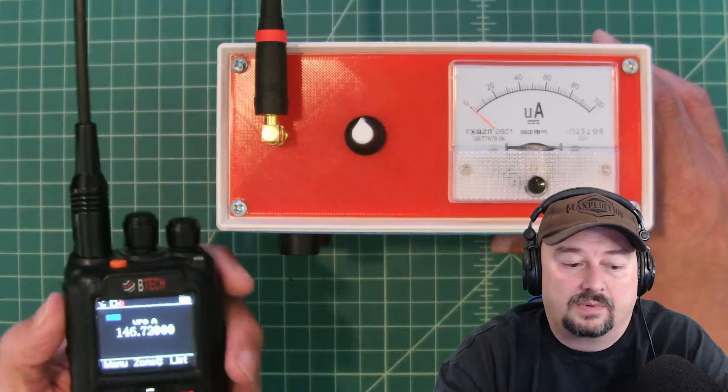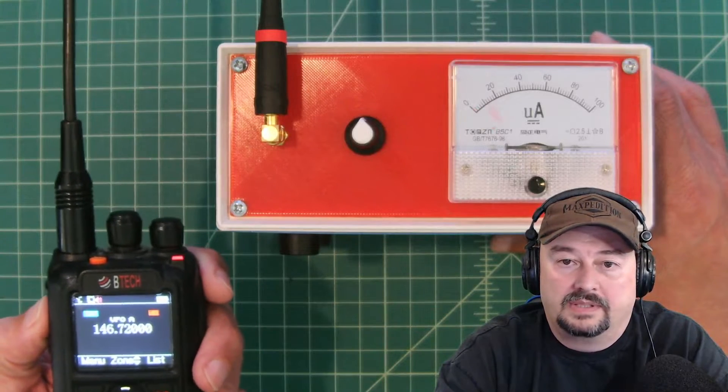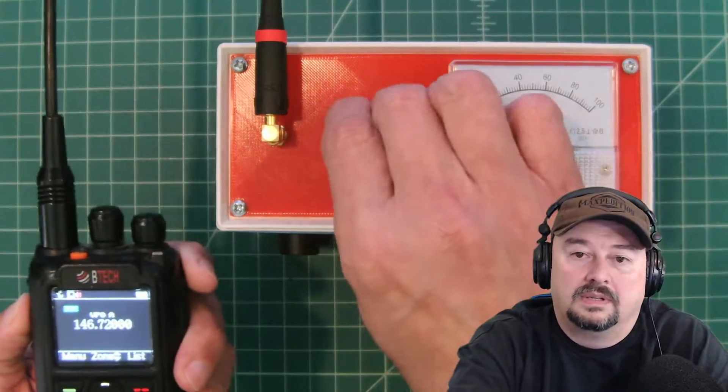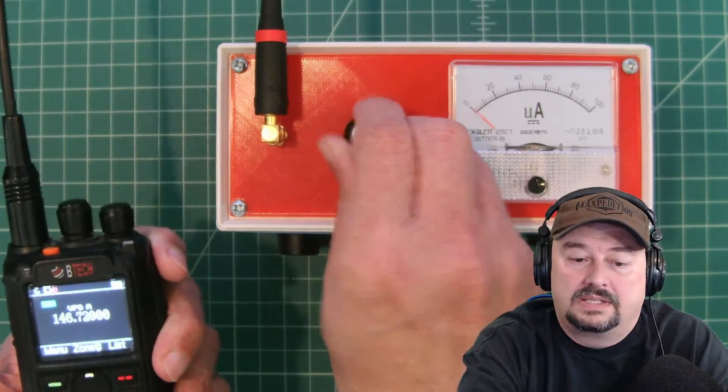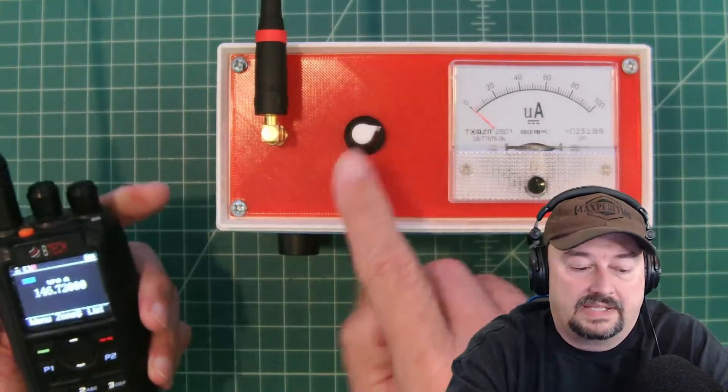Okay, so what we're going to do now is just go ahead and key up and see what we see. There you can see that the attenuation can be adjusted by this knob.